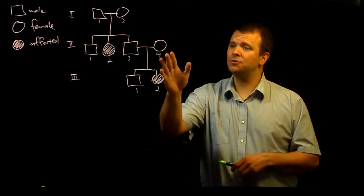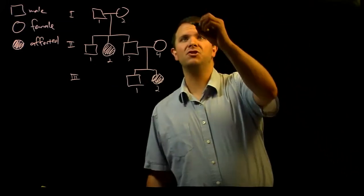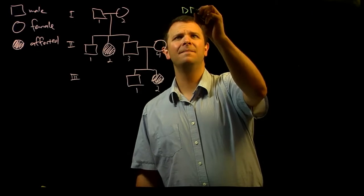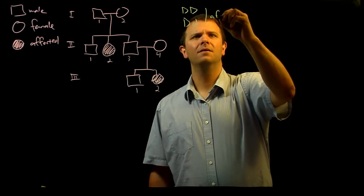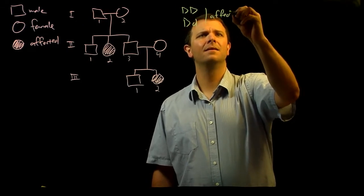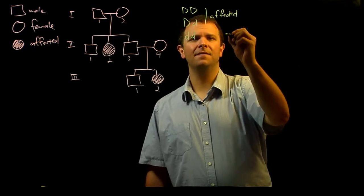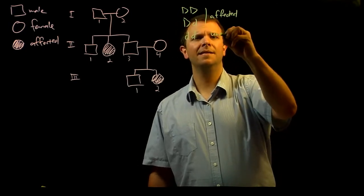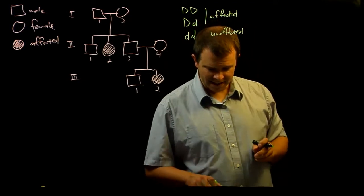For example, let's assume that this pedigree is for a dominant trait, and let's call that gene D. Then the dominant homozygote and the heterozygote are affected, and the recessive homozygote is unaffected. Is this possible?